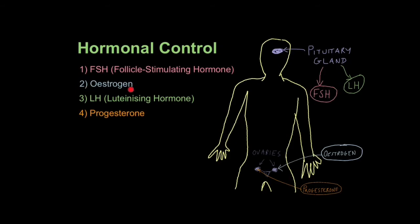Next up is oestrogen, which is released from the ovaries and also from the cluster of cells that surround the egg cell. The main job of oestrogen is to build up the lining of the uterus so that it becomes nice and thick — like a big cushion to receive the fertilized egg.